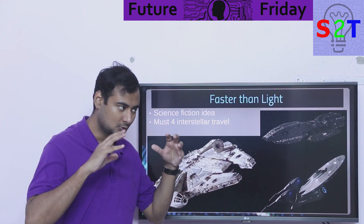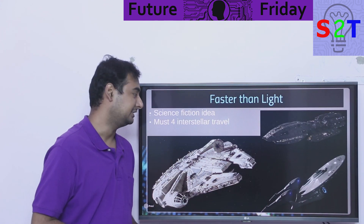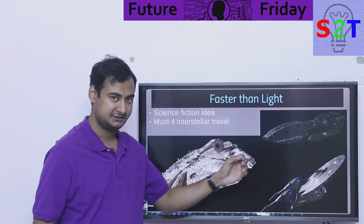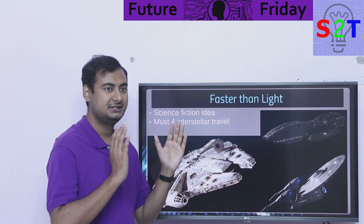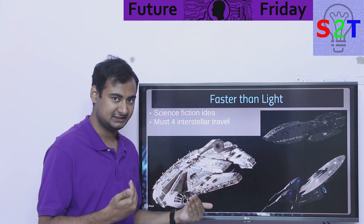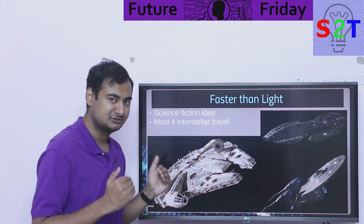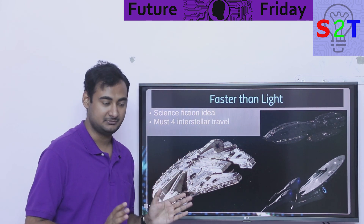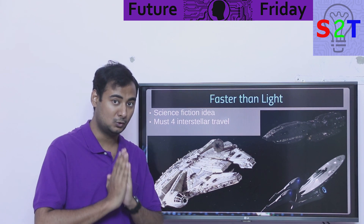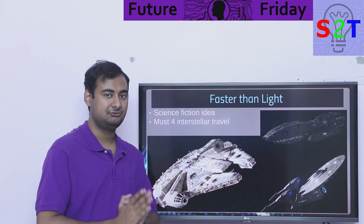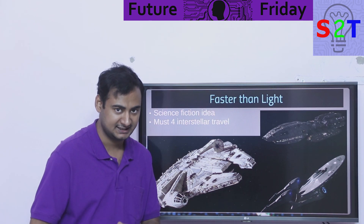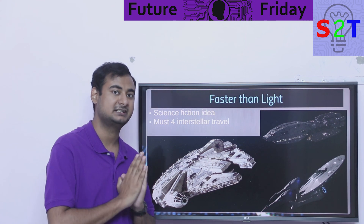Basically we are talking about something that travels faster than light — 300,000 km per second — we want to exceed that speed. Now general relativity on the matter is very clear: you can travel at light speed only if you are 100% massless, basically like a photon.